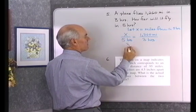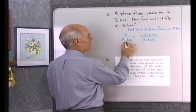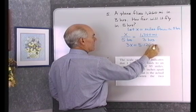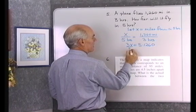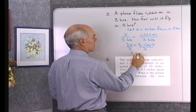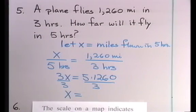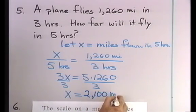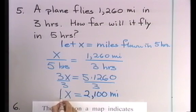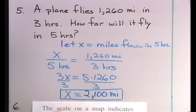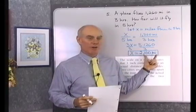I'll multiply x times 3 and get 3x. And then I'll multiply 5 times 1,260. Now, I divide both sides by 3. And I end up with x is equal to 2,100 or 2,100 miles. Now, I did this on a calculator. I multiplied 5 times 1,260 and divided by 3. That gave me the 2,100 miles for this.